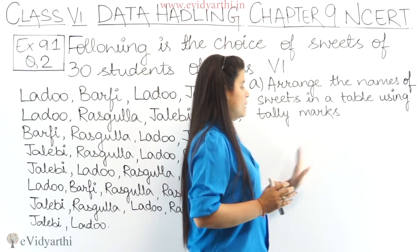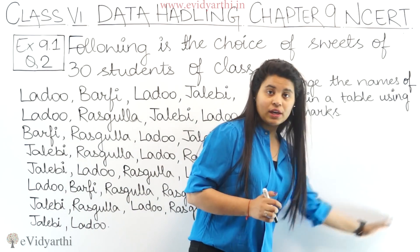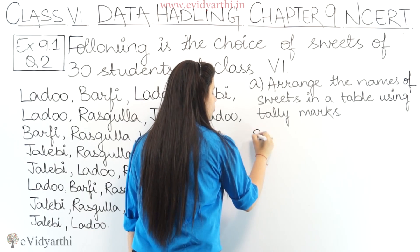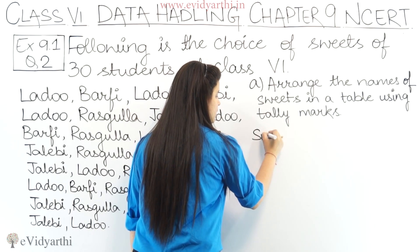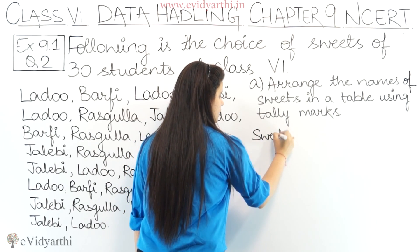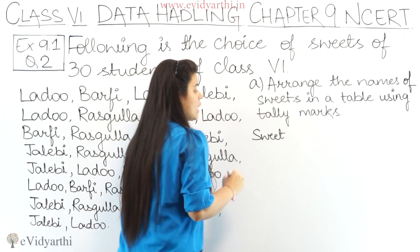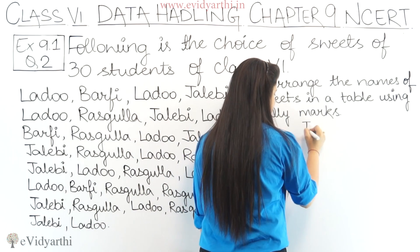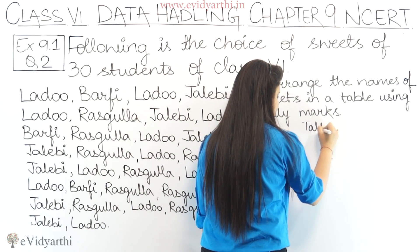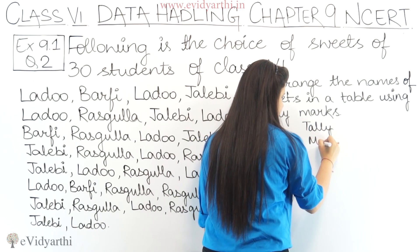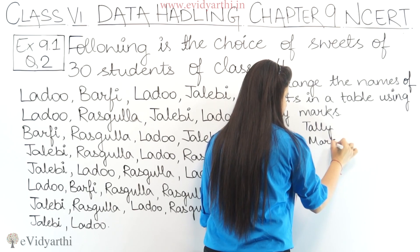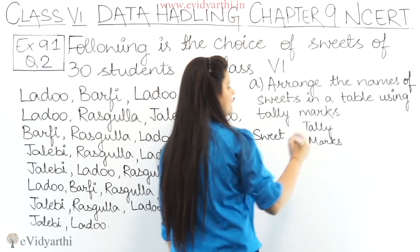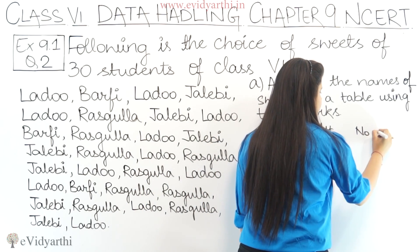First let's make the columns. The first column is the name of the sweet, the second column is tally marks, and at the end we will take number of students.